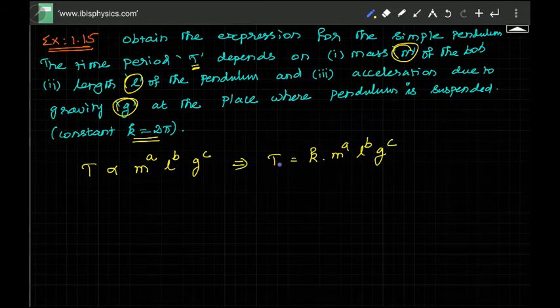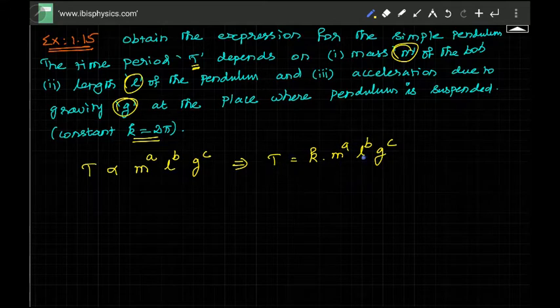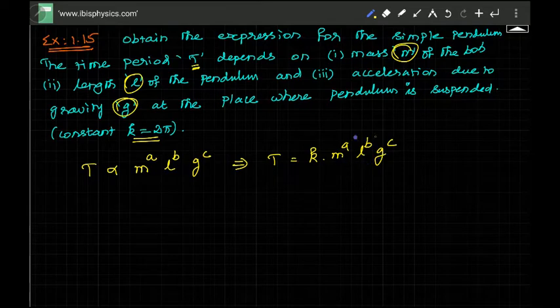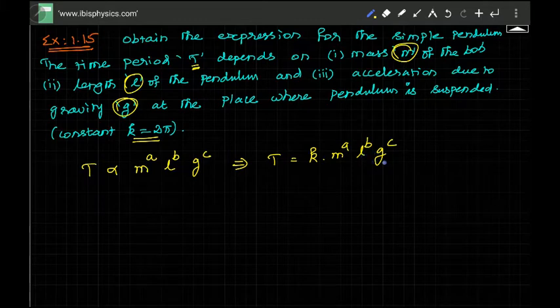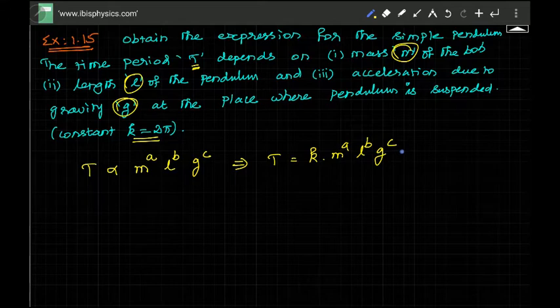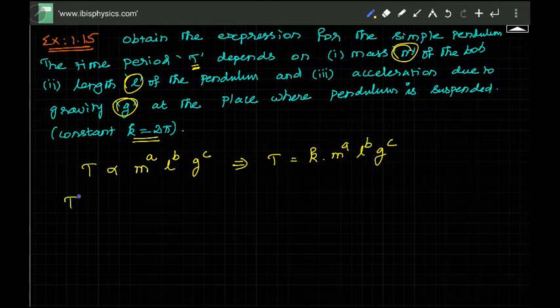If this relation is true, the left hand side will have the dimensions which will be equal to right hand side. When you do algebraically some manipulation with these quantities, you will end up having the unit which is the unit of time period, that means time seconds or the dimension must be T. Left hand side time period, its dimension is T.